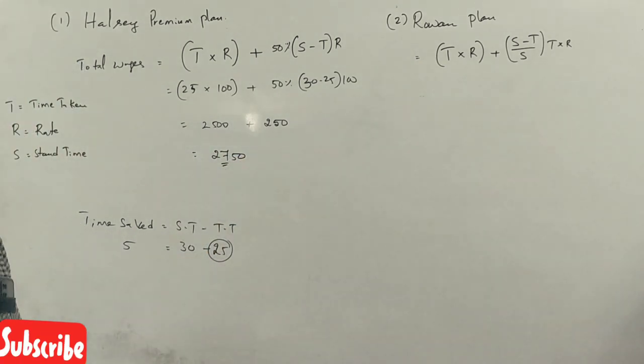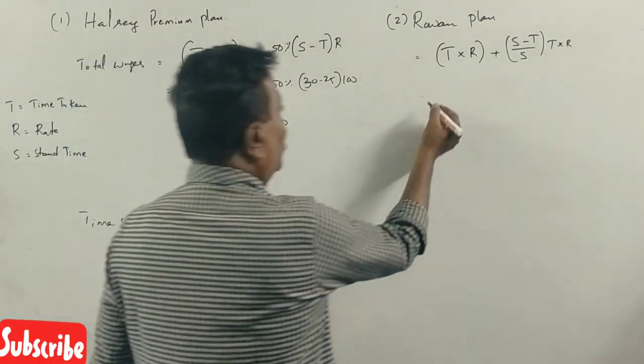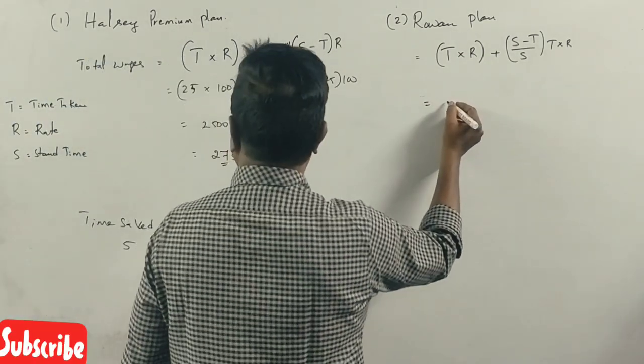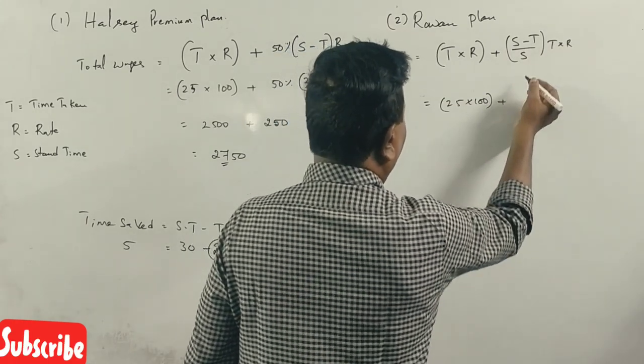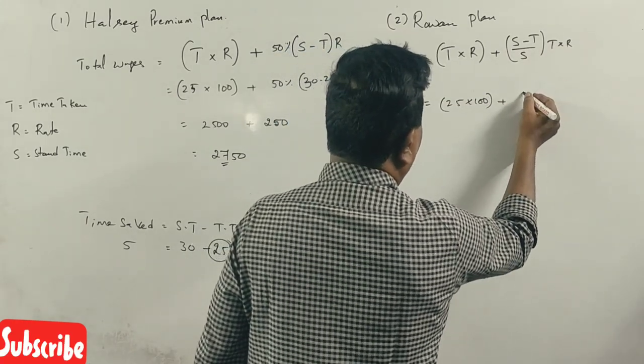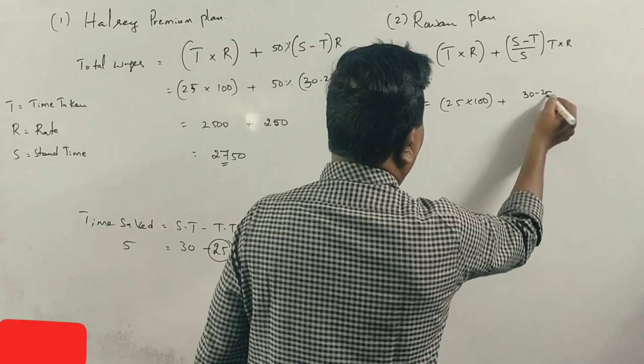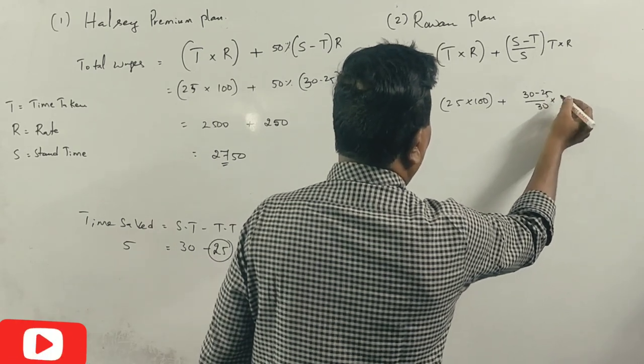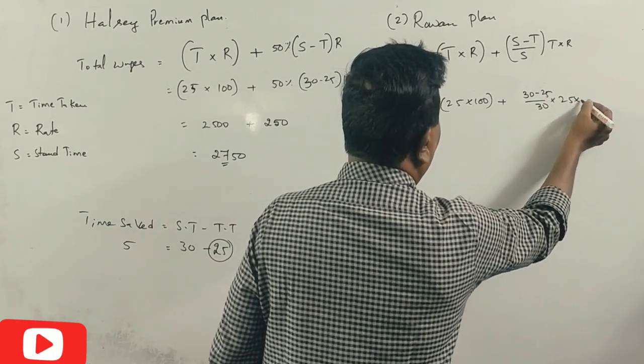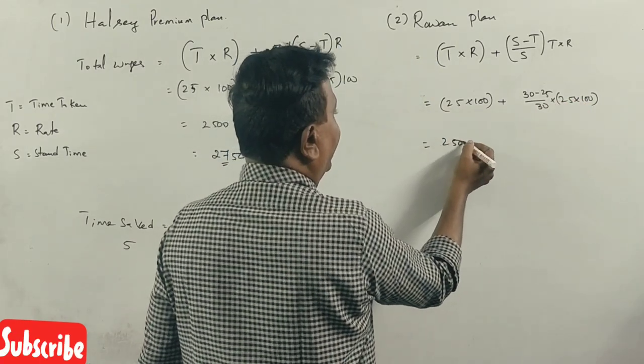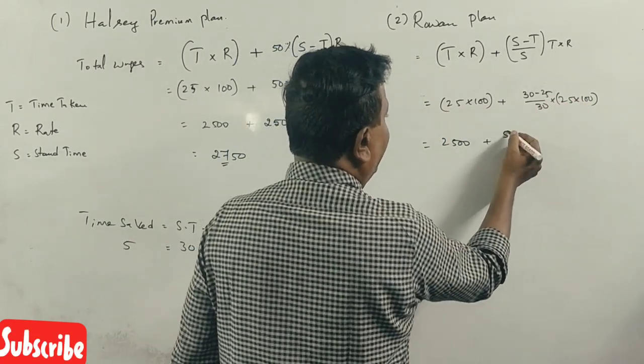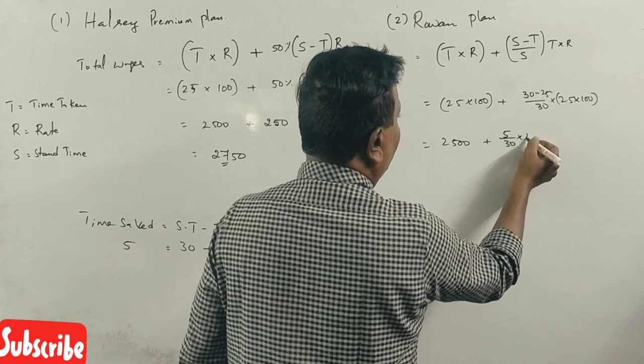Under Rowan Plan: 25 into 100 plus (standard time minus time taken) divided by standard time into 2500. That's (30 minus 25) divided by 30 into 2500, which equals 2500 plus 5 by 30 into 2500.